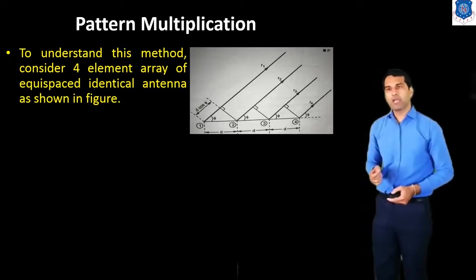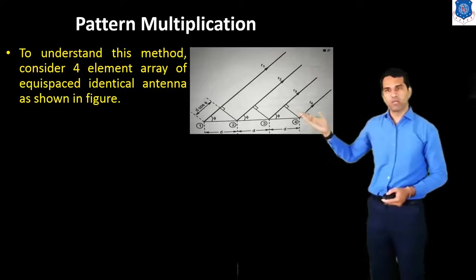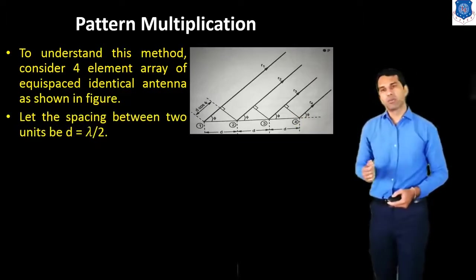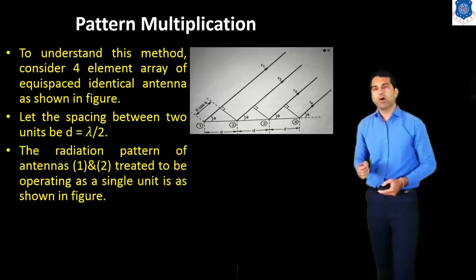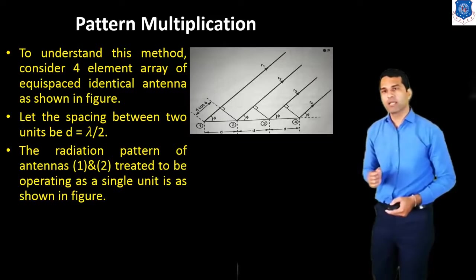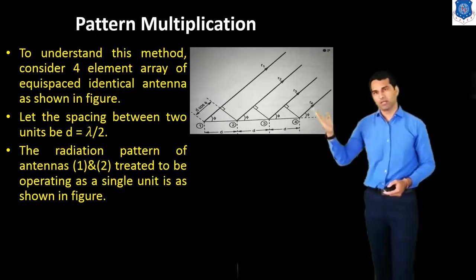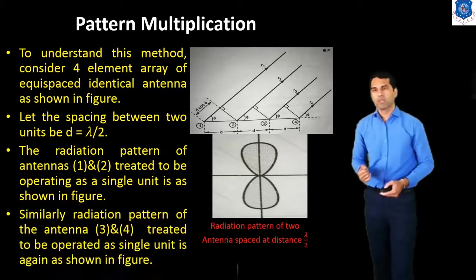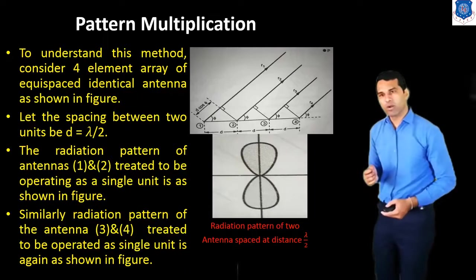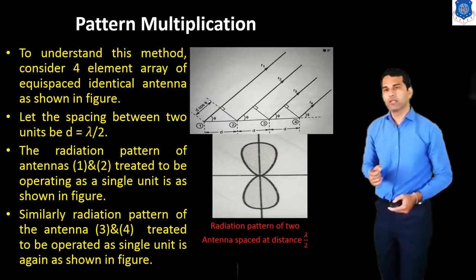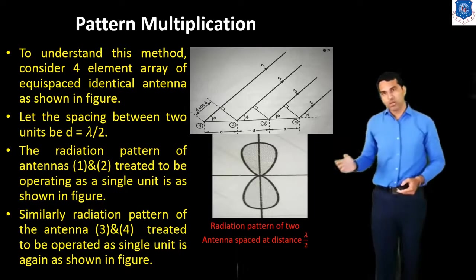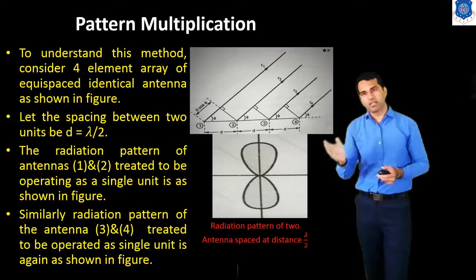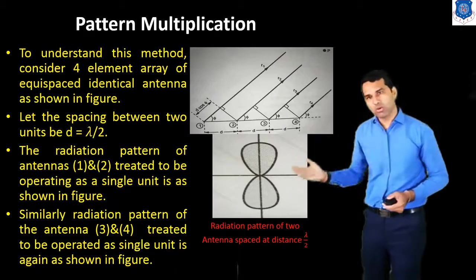To understand this, we consider a four-element array of equally spaced identical antennas. The spacing between elements is d equals lambda over 2. The radiation pattern of antennas 1 and 2, treated as operating as a single unit, is as shown in the figure. Similarly, the radiation pattern of antennas 3 and 4, treated as operating as a single unit, is also shown. This is the pattern multiplication concept, giving the final patterns for elements 1-2 and 3-4.